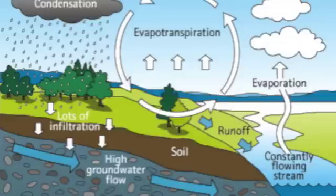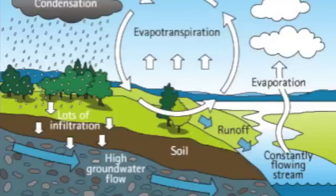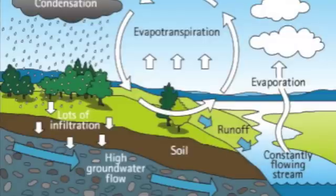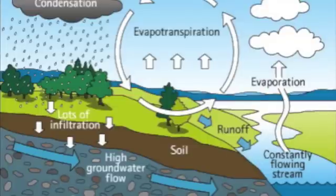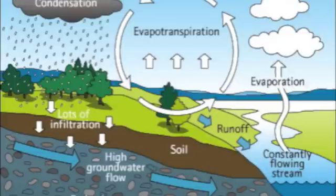Vapor made by evaporation, the clouds are made by condensation. Rain and snow is precipitation, water collects with accumulation. The water cycle begins, recycled in the ocean.